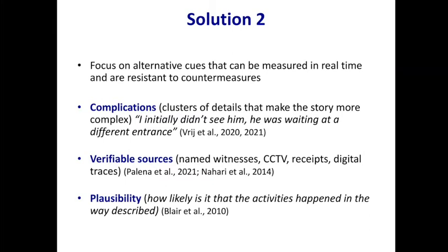So what's the solution? You need to focus on alternative cues that can be counted in real life time. There are three identified so far. Complications are clusters of details that make a story more complex — for example, initially didn't see him, was waiting at a different entrance. These are more likely to occur in truthful stories and people can count them in real life time. Verifiable sources — named witnesses, CCTV footage, receipts, digital traces — things suspects refer to that you can check; these are more likely in truthful stories and can be counted in real time. Plausibility — how likely is it that activities happened in the way described — can also be judged in real life time. All three of these cues are more difficult for liars to imitate when they try to use countermeasures.